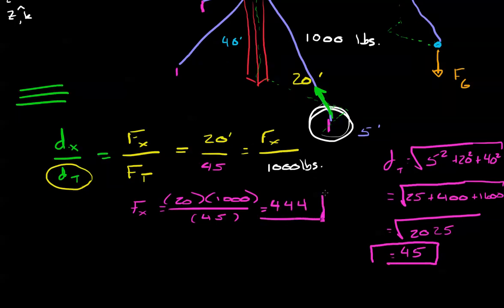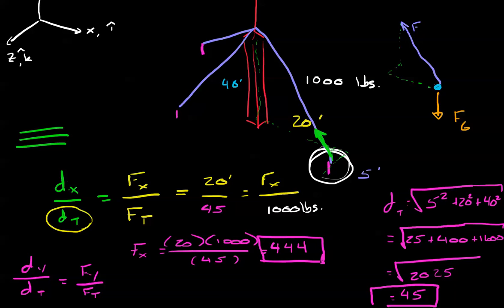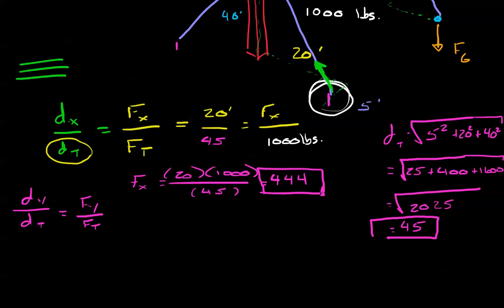So, now we know that the force in the x-direction is 444 pounds. Now, one of the neat ways, one of the advantages of doing this is we also know we can do the same thing in the y-direction. So, we have a choice. We can say distance in the y-direction over distance total equals force in the y-direction over force total. And, if we do it this way, it's going to be all the same, basically the same thing.